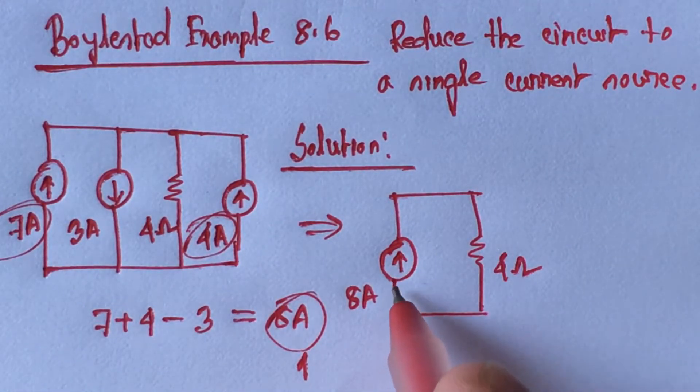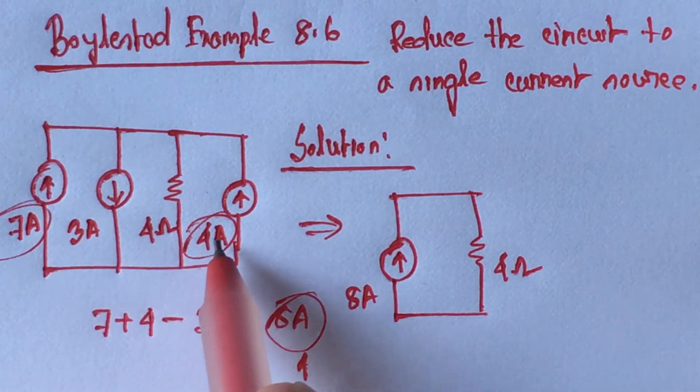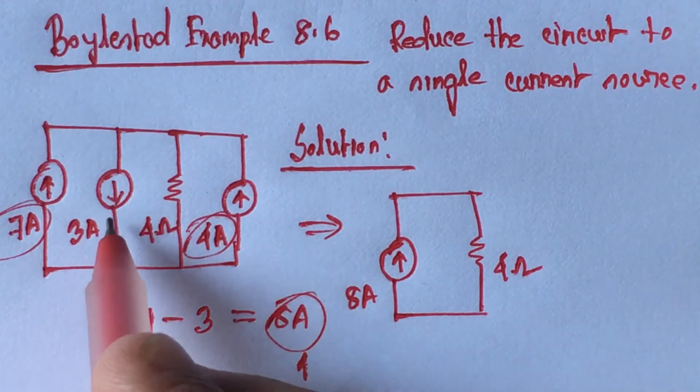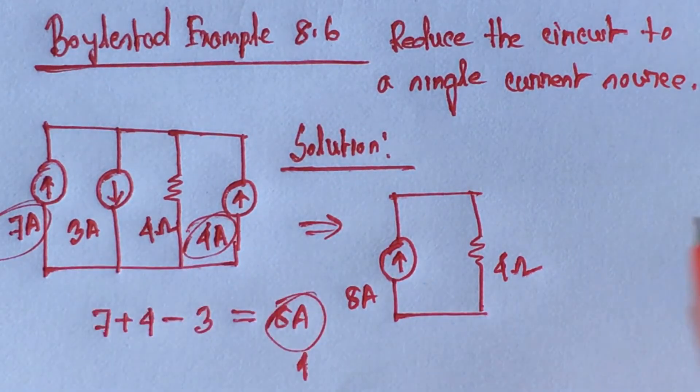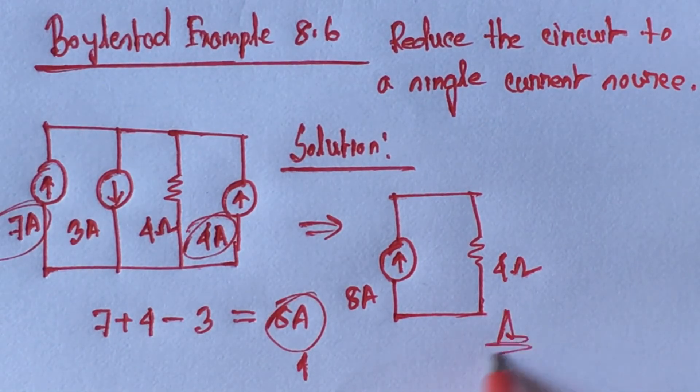The value of this 8 ampere current is upward because the combination of 7 ampere and 4 ampere current is higher than the value of 3 ampere. So this is the equivalent circuit is the answer.